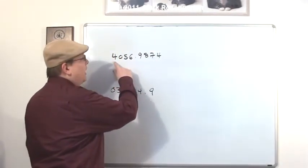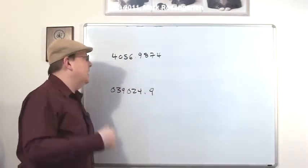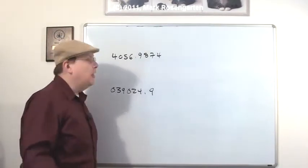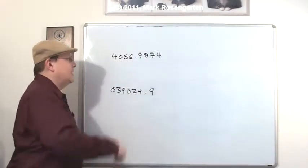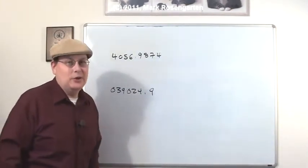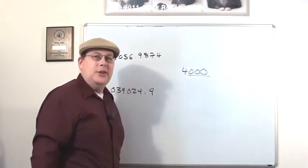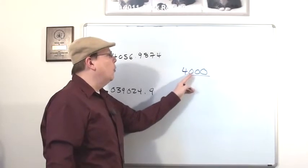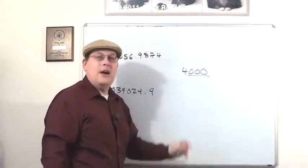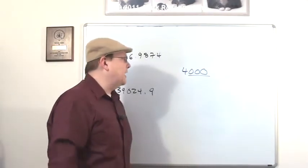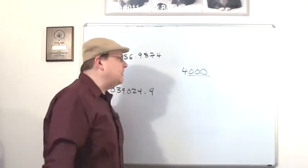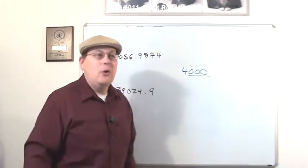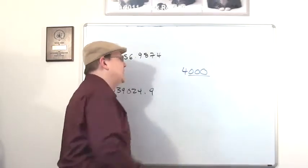In this first number right here, every digit that's written down is a significant figure. There are no place holding zeros. You might say, well, what about that zero right there? That's not a place holding zero. These are place holding zeros. You see, we don't know what exactly it is that comes after that four. This could be 4,112. We don't know. It could be 3,956. We don't know. We've just rounded the answer up to the nearest thousand.